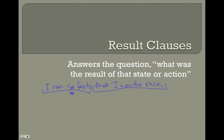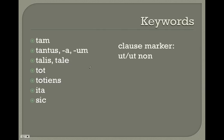So what we want to do here in Latin is: how do we form this result clause? As you might expect, you're going to use the subjunctive in that clause. Before we get to that, though, we have some key words. In your main clause, we're going to have markers that predict there's going to be a result clause coming next. Most of these start with T: tam (so), tantus (so great, or so much), talis (of such a sort).